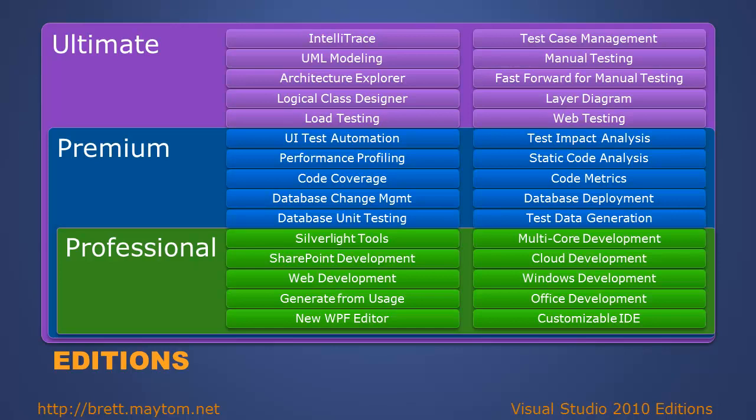The Premium edition has everything in Professional but adds developer productivity components such as profiling, code coverage, metrics, and other analysis reports. Database tooling such as database change management, unit testing for databases, and test data generation are also included. UI test automation can also be built using the Premium edition.